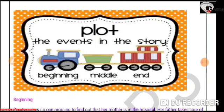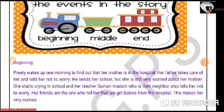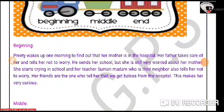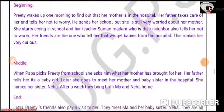Next let's move on to the plot — the happenings and events in the story. Every story has a beginning, a middle and the end. In the beginning, Preeti wakes up one morning to find out that her mother is in the hospital. Her father takes care of her and tells her not to worry. He sends her to school, but she is still very worried. She starts crying in school and her teacher, Suman Madam, who is their neighbour, tells her not to worry. Her friends are the ones who tell her that we get babies from the hospital, which makes her very curious.